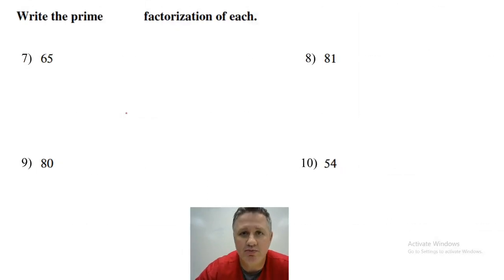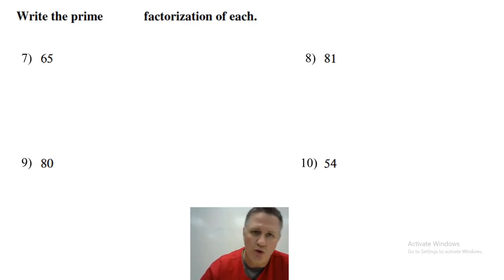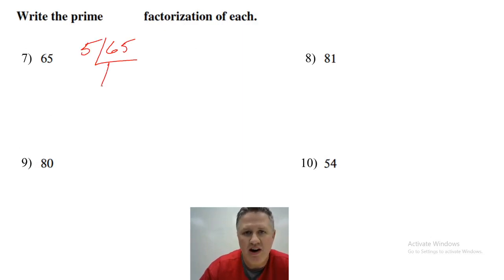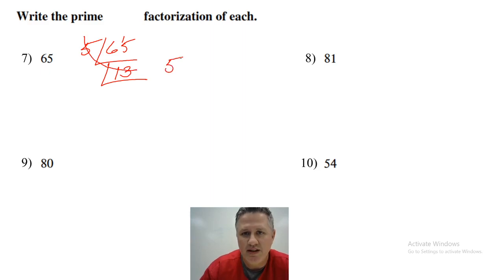Now we're going to move on to prime factorization. I could do the tree method or the slide — I'm going to choose the slide. What prime number goes into 65? I'll say 5. Five goes into 65, giving 13. And 13 is prime, so I'm done. The answer is 5 × 13.